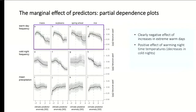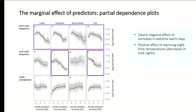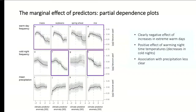We created partial dependence plots to see the actual functional relationship — whether temperature has a negative effect with increasing temperature. The first row shows the marginal effect of warm day frequency: all functional relationships are basically negative — the higher the frequency of extreme warm days, the lower the yield anomaly. Cold night frequency shows the inverse: a decrease in cold nights has a positive effect. For precipitation, the relationship is less clear — not as strong as the temperature effect.